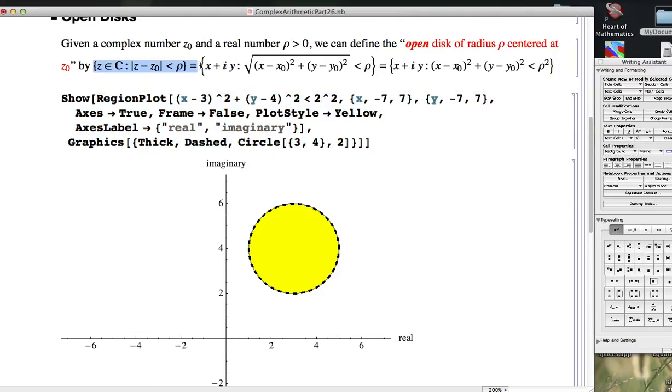You can write this in set builder notation in one of three nice ways there. The set of all complex numbers z in ℂ, whose distance to z₀ is less than ρ. You can write that with x plus iy. The real and imaginary parts are x and y. And use the distance formula to write it this way. You can also square both sides of that inequality to get rid of the square root.